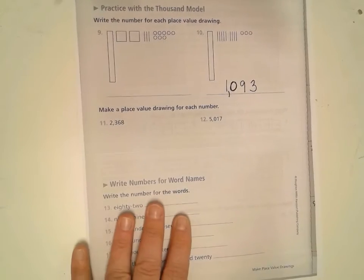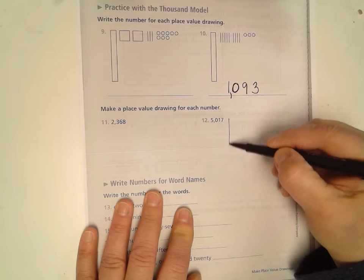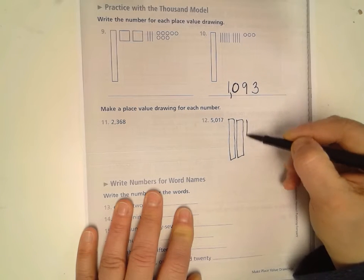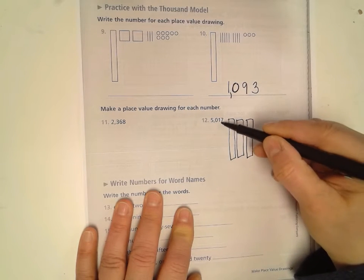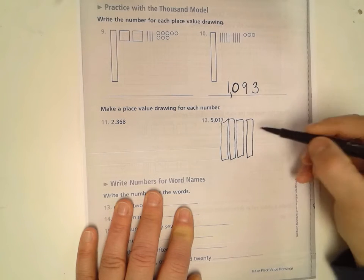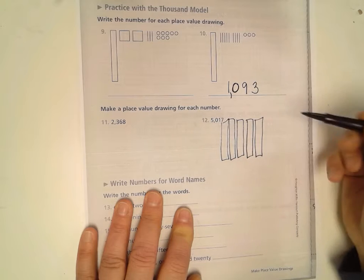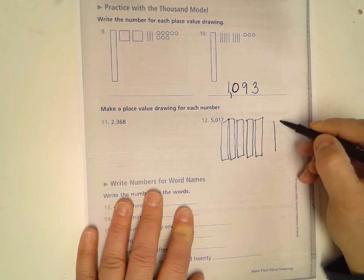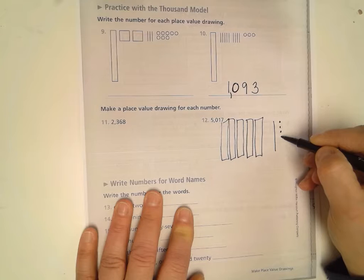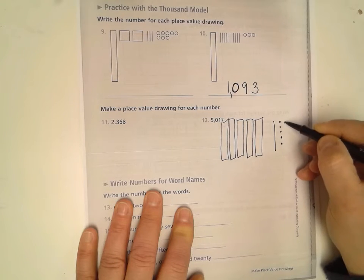Alright and then if we were drawing for this number we would have five of those lovely thousands. I'm going to put one over here. Five of the thousands. We don't have any, there's a zero there. So no hundreds and then one ten and then our seven ones. There you go.